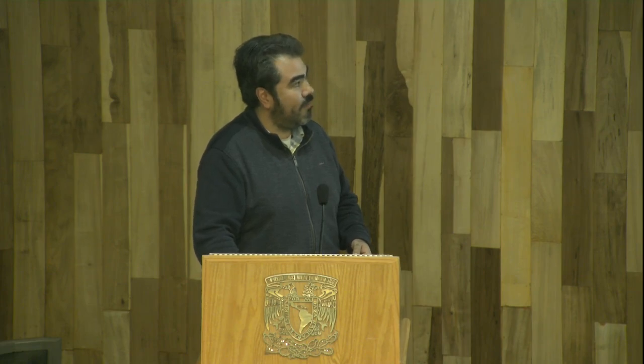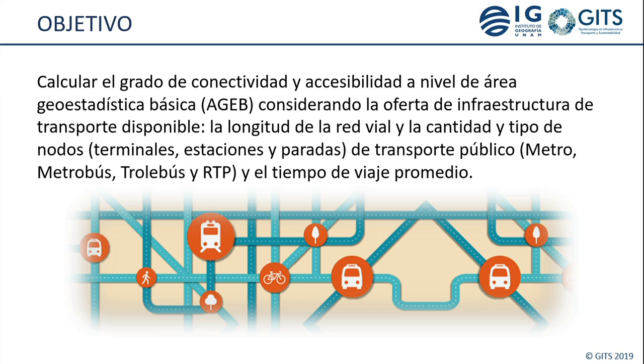Lo que les voy a platicar el día de hoy es una síntesis de un proyecto de investigación que estamos desarrollando con datos abiertos de diferentes fuentes. El objetivo es calcular el grado de conectividad y accesibilidad a nivel de AGEB, considerando la oferta de infraestructura de transporte disponible, la longitud de la red vial, los tipos de nodos de transporte público —terminales, estaciones y paradas del metro, metrobús, trolebús y la red de transporte público— y una base de datos que acaba de liberar Uber sobre accesibilidad, que contiene el tiempo de viaje promedio.